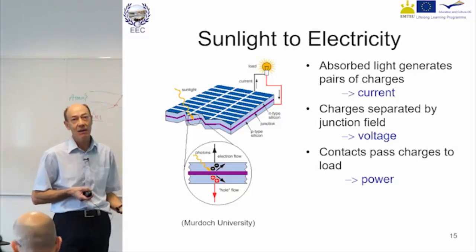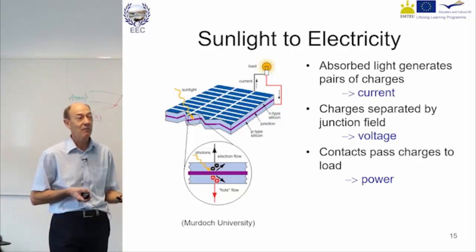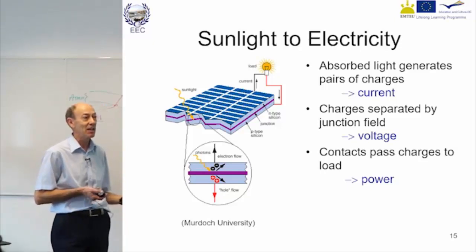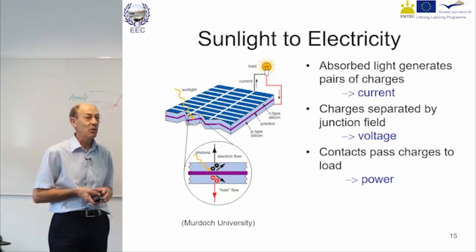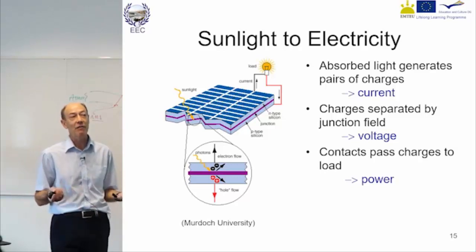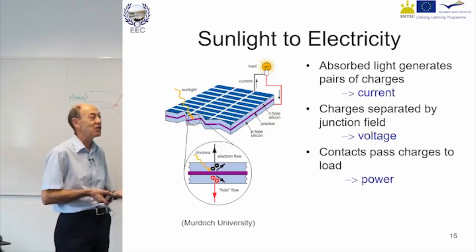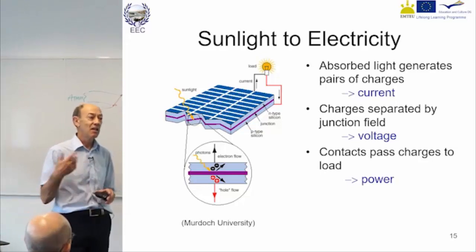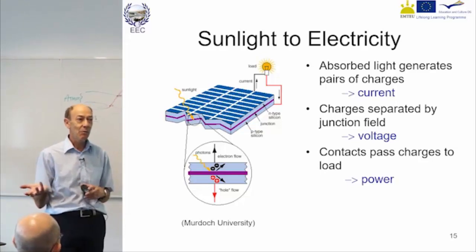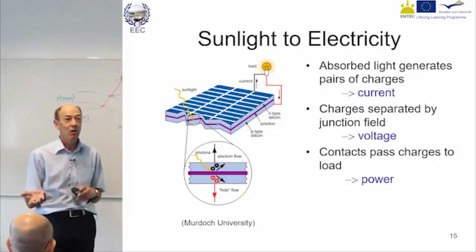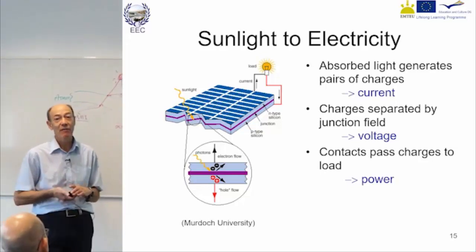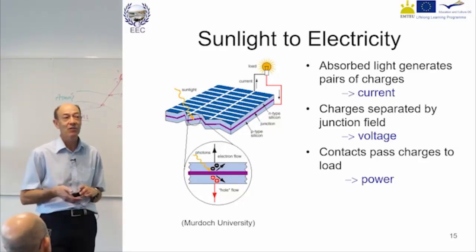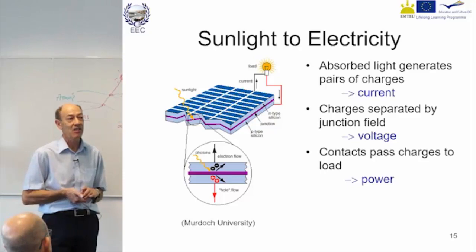It doesn't require chemistry, it doesn't require moving parts, and that's why PV panels have this long life — because there's less to actually degrade compared with usual batteries, photochemical effects, or photoelectrochemical effects. There's no chemical degradation.